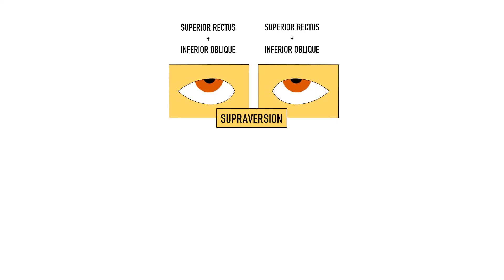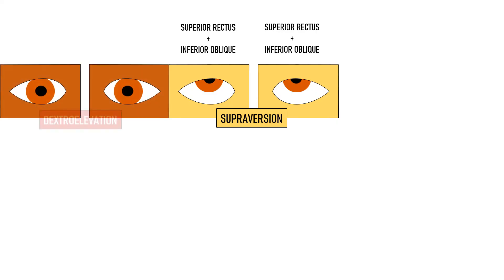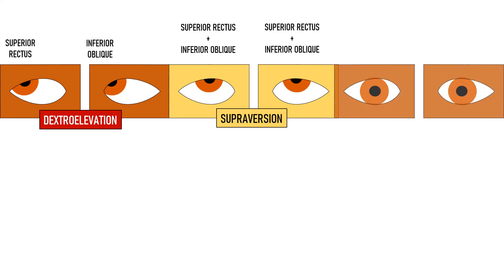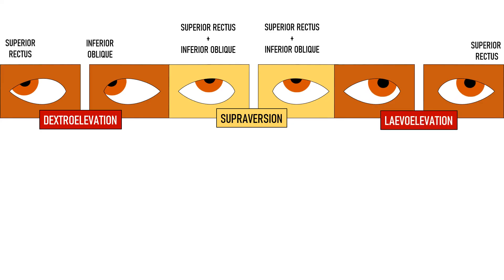To test the superior rectus and inferior oblique separately, we test the eyes in tertiary positions — obliquely. When we move the eyes to the right and up direction, that is in dextro elevation, we are isolating the right eye's superior rectus and the left eye's inferior oblique. To test the right eye's inferior oblique and left eye's superior rectus, we move the eyes to the left and up direction — that is levo elevation.